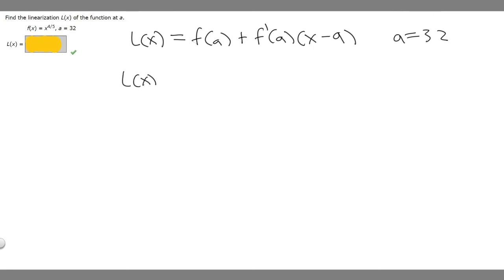So we know that L of x is going to be equal to f with respect to a. So our function f of x, which is x to the 4/5, we just replace x with a. We know a is 32. So it's just going to be 32 to the 4/5 plus.